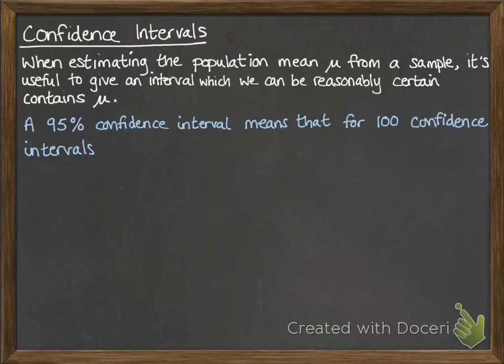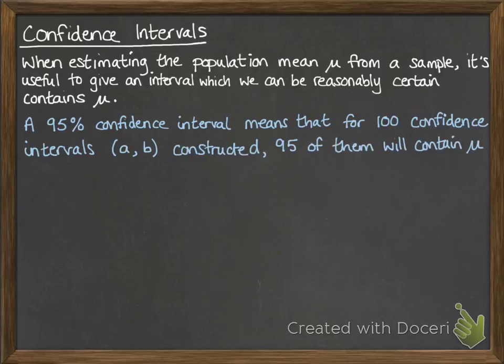A 95% confidence interval means that for 100 confidence intervals, written in brackets [a, b], or most often as square brackets, if we constructed 100 of these confidence intervals, 95 of them would contain the real population mean μ.